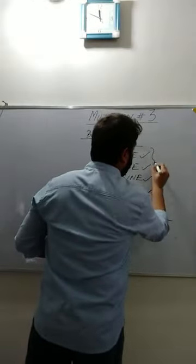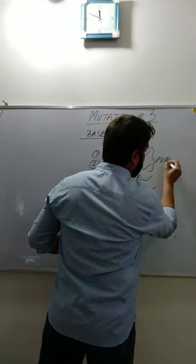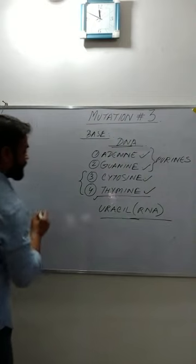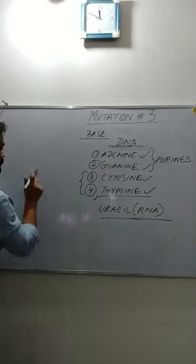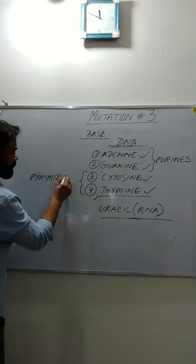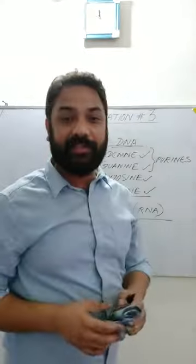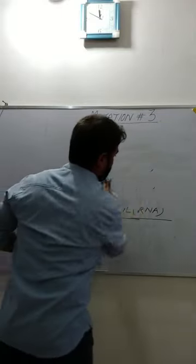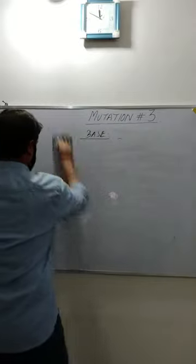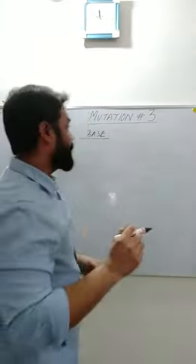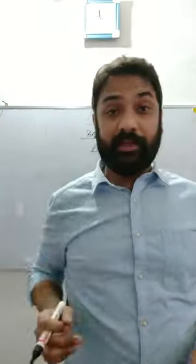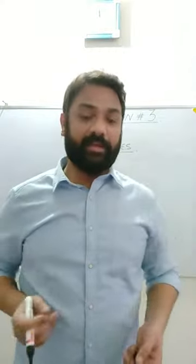Adenine and guanine are the purines. A purine is a nitrogenous base that has a double ring structure — that means it has one ring along with another ring fused to it. Since both adenine and guanine are purines, both will have this double ring structure. There are certain differences between them, which we will now discuss.